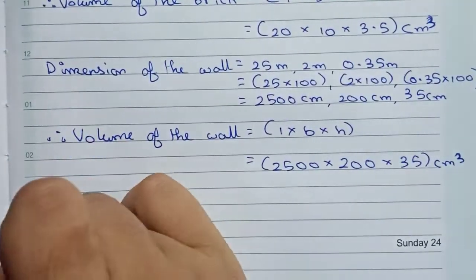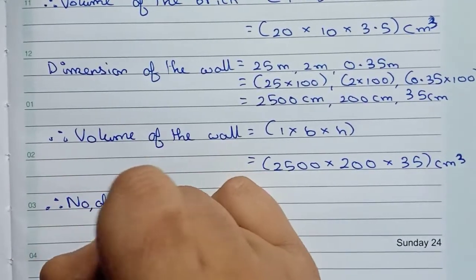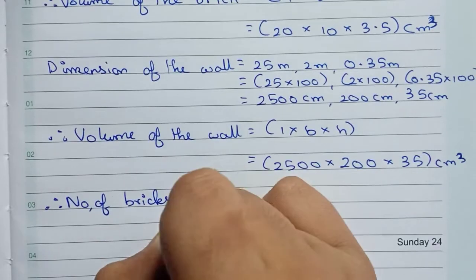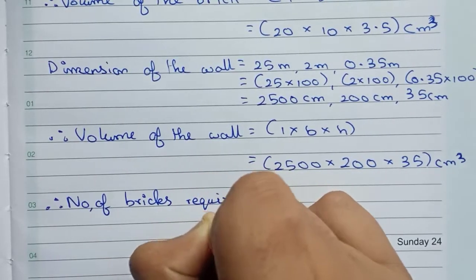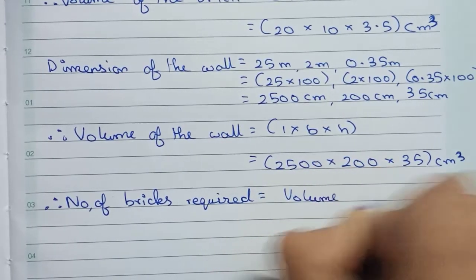So now you write: Number of bricks required equals to the volume of the wall divided by the volume of the brick.